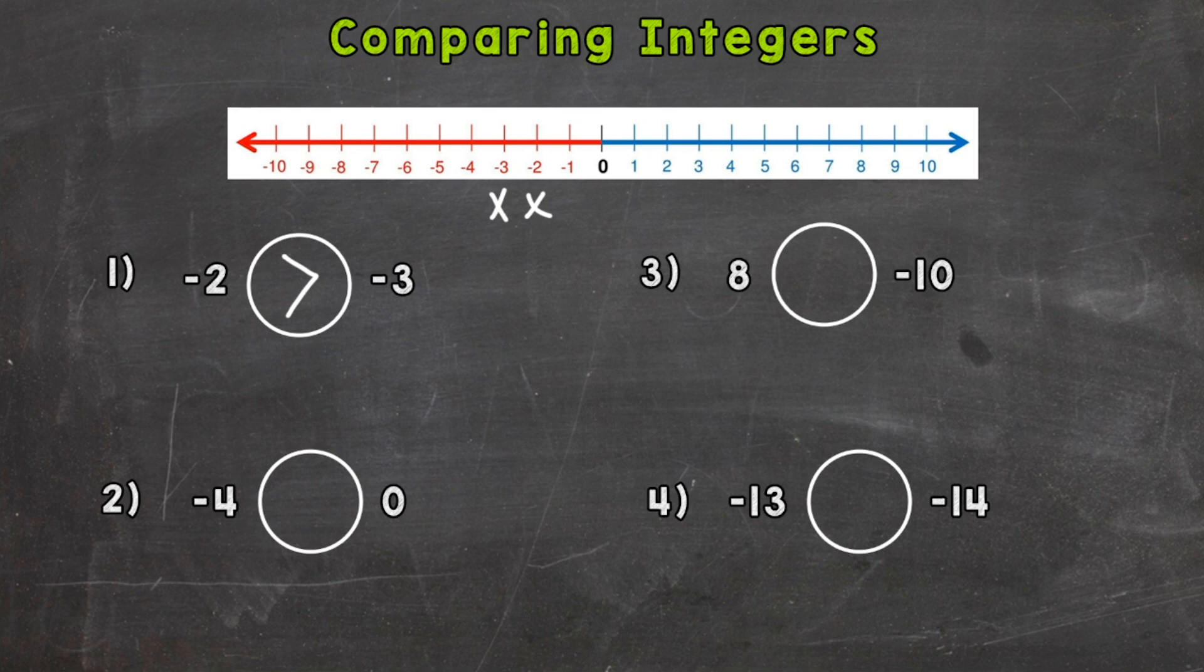So negative 2 is greater than negative 3. I also like to think of temperature whenever we have a problem that involves negative numbers. So which is warmer or greater? Negative 2 or negative 3? Well, negative 2 degrees is.